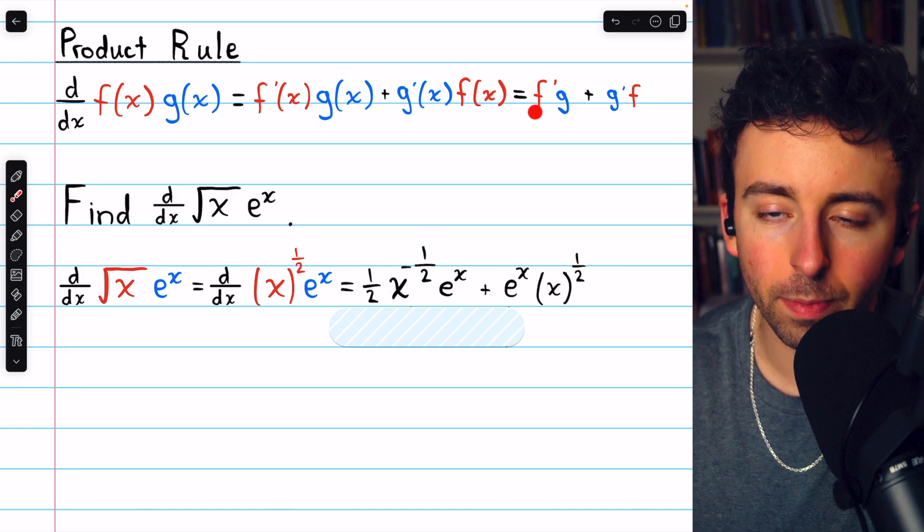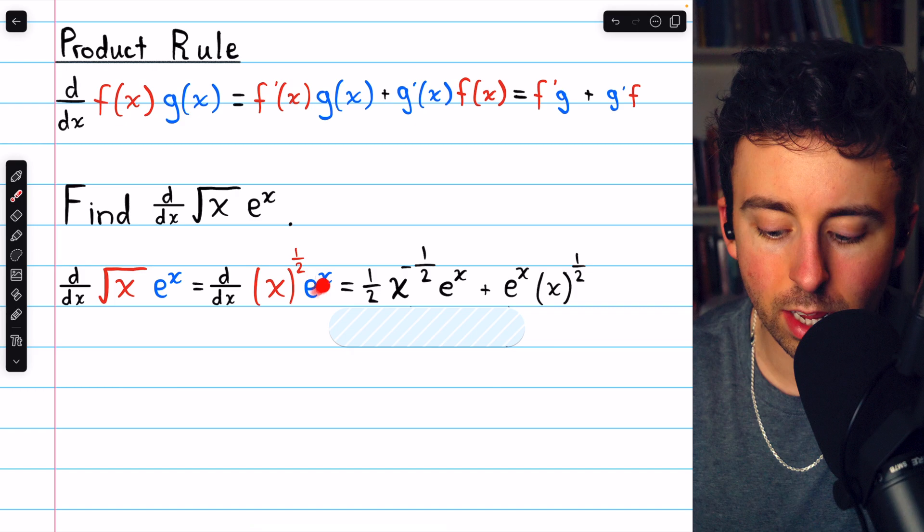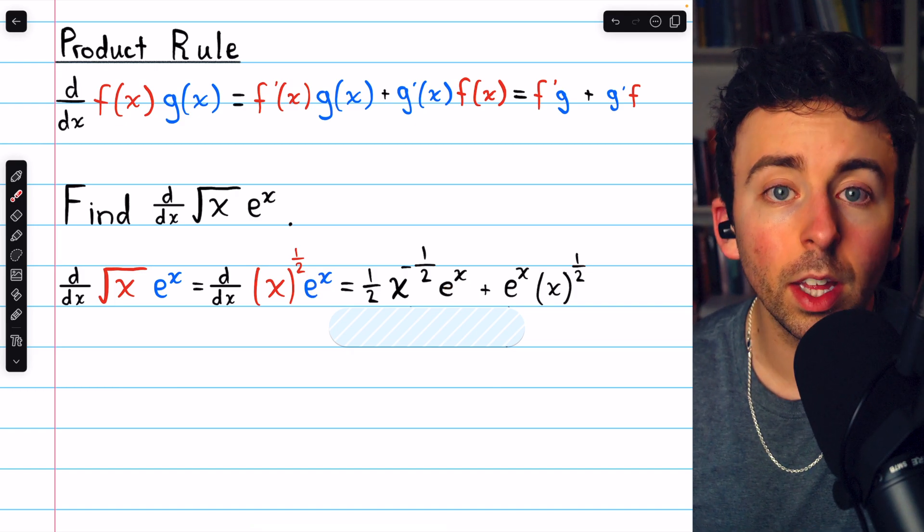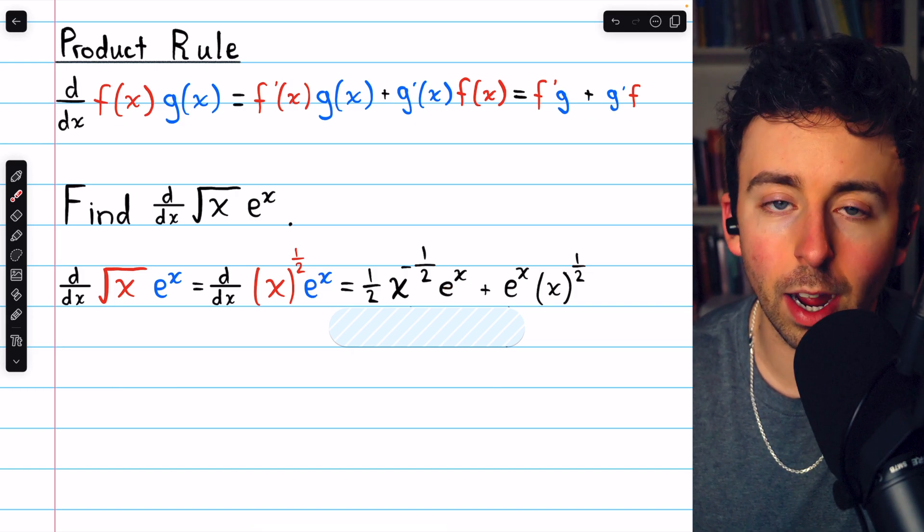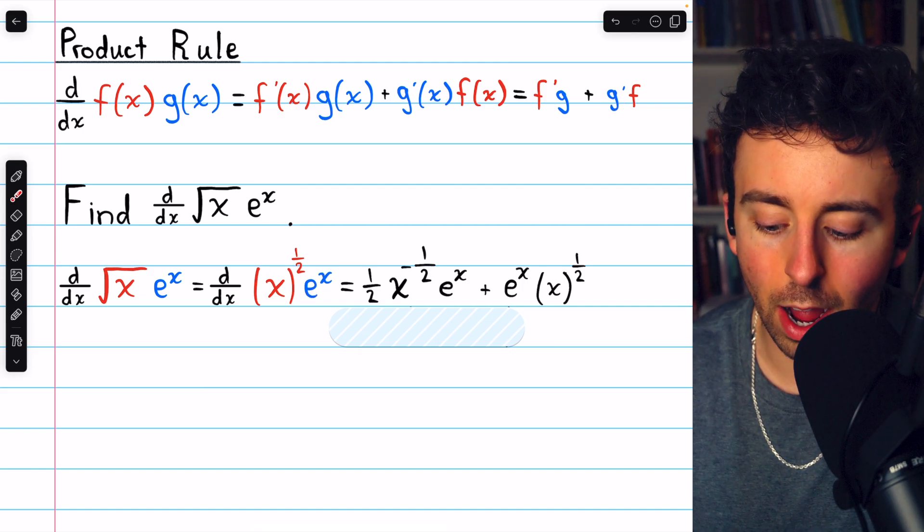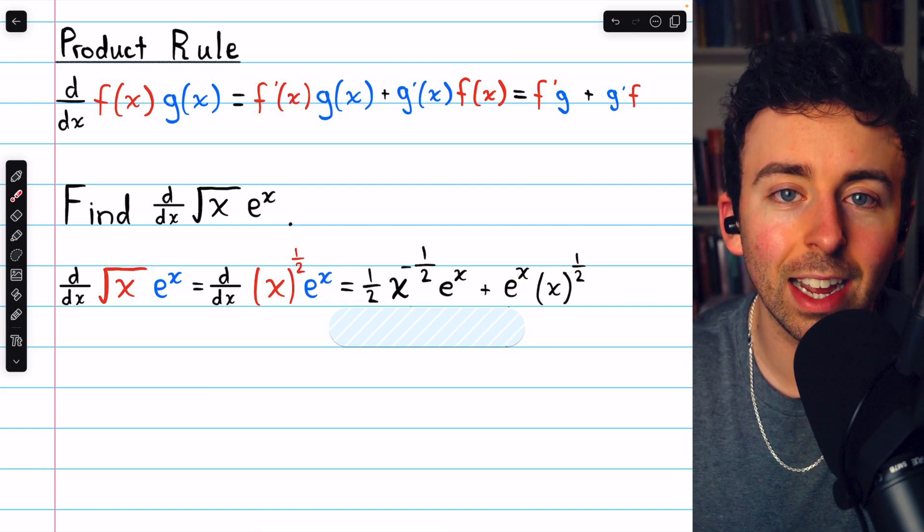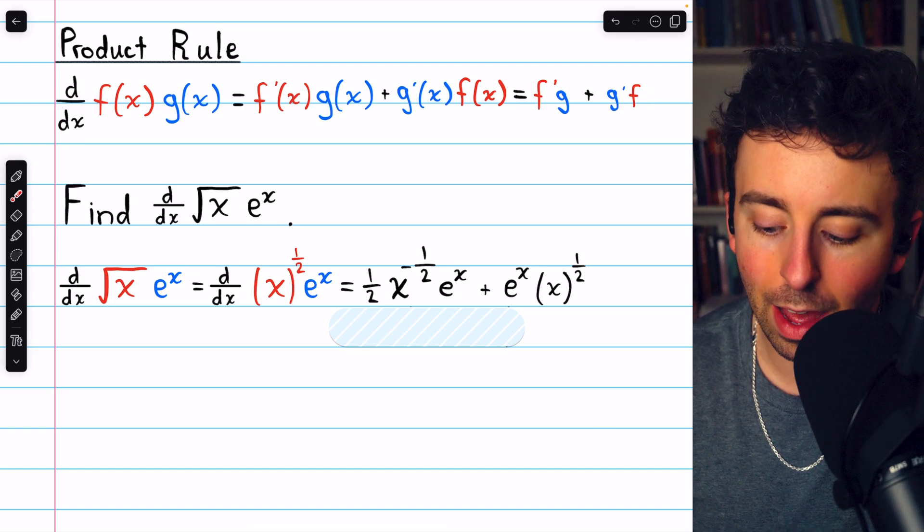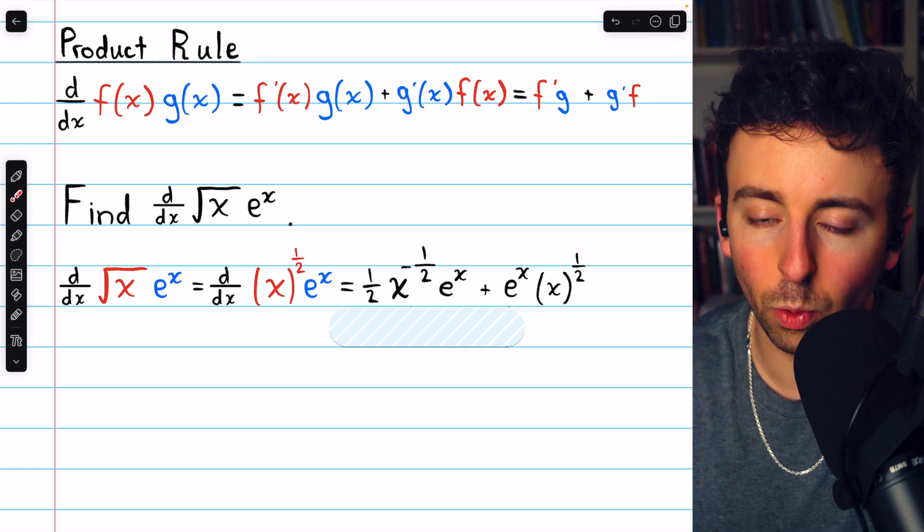So that is f prime. We then must multiply it by g, which is just e to the x. Then plus g prime f. g is e to the x, so g prime is also just e to the x. That then gets multiplied by f, which of course is x to the one half.